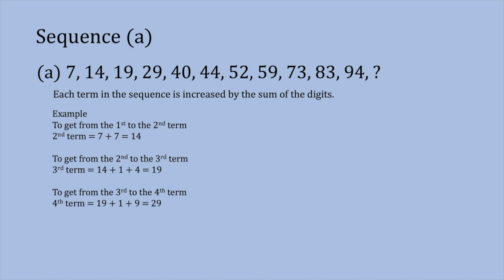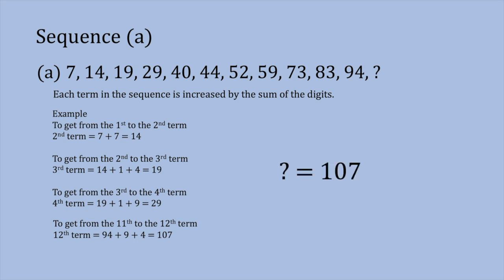We can do the same to get from the third to the fourth term. The third term is 19; the digits are 1 and 9, so 19 plus 1 plus 9 is 29. We take the term we already know and increase it by the sum of its digits. We know 94 is the 11th term, so the 12th term is 94 plus 9 plus 4, which gives us 107. That is our final answer for Sequence A.